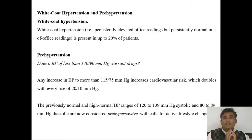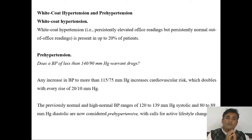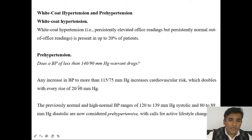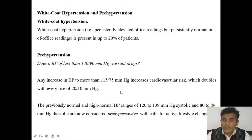When systolic blood pressure is at 115 and diastolic at 75, every increase of about 20 mmHg in systolic blood pressure and every elevation of 10 mmHg in diastolic blood pressure doubles the cardiovascular risk.